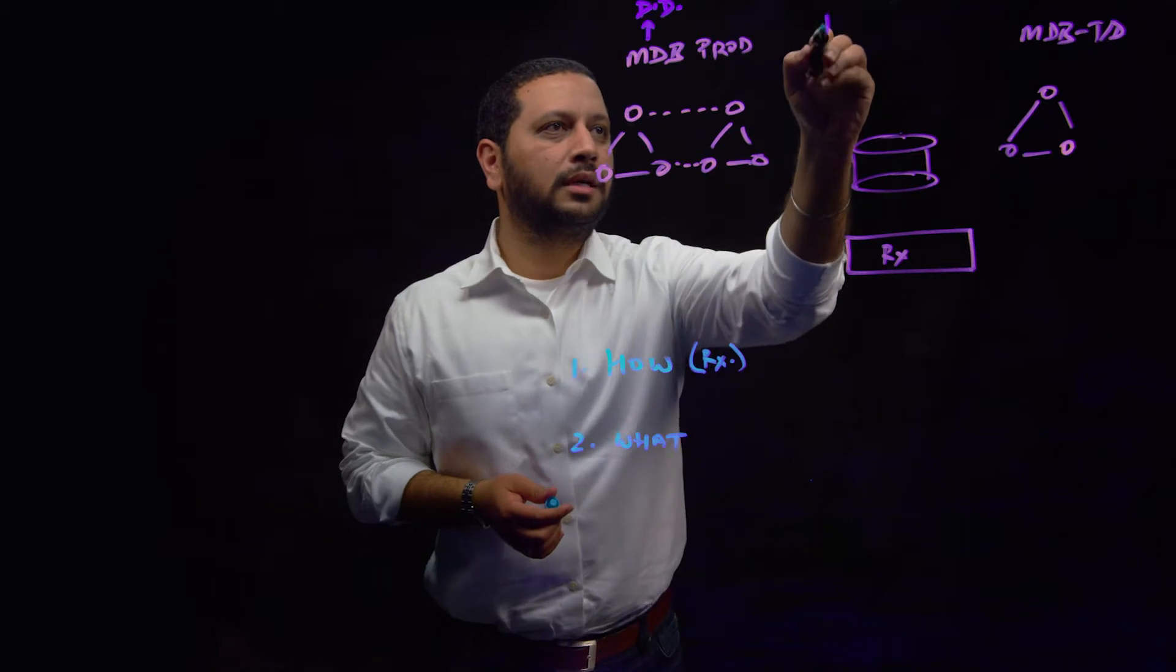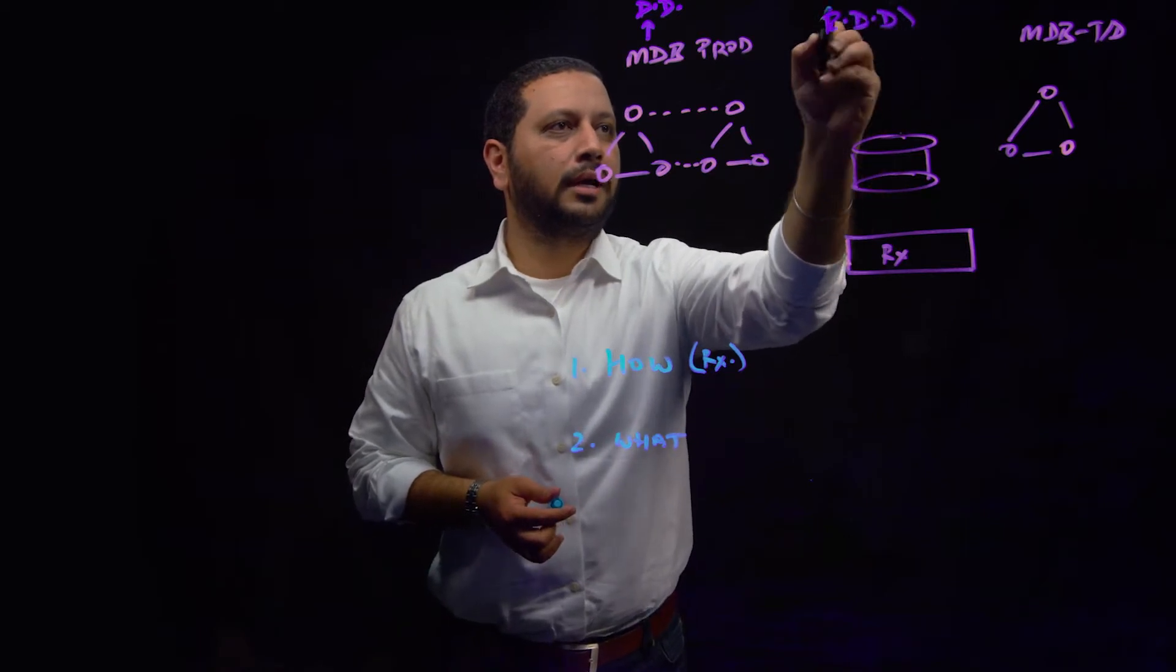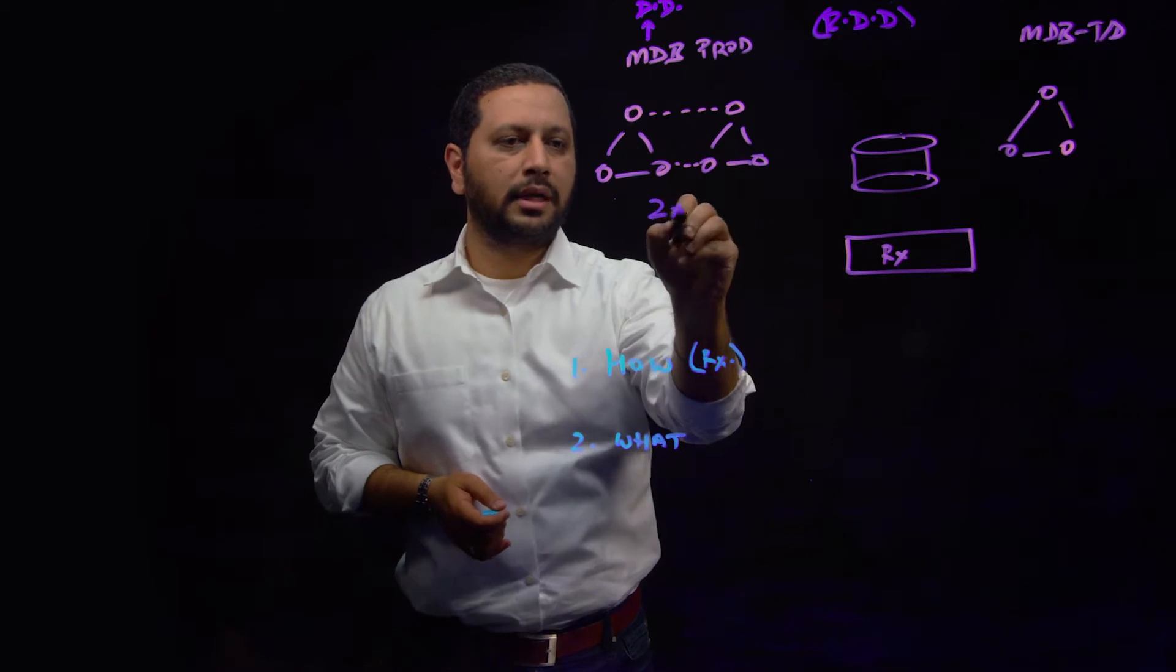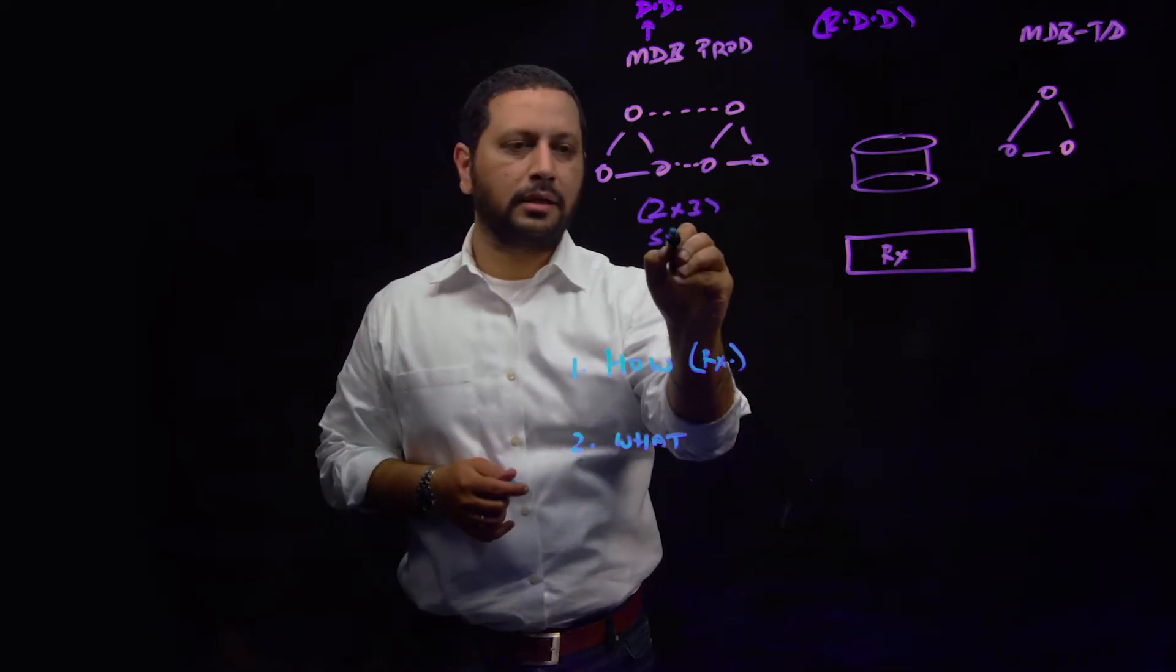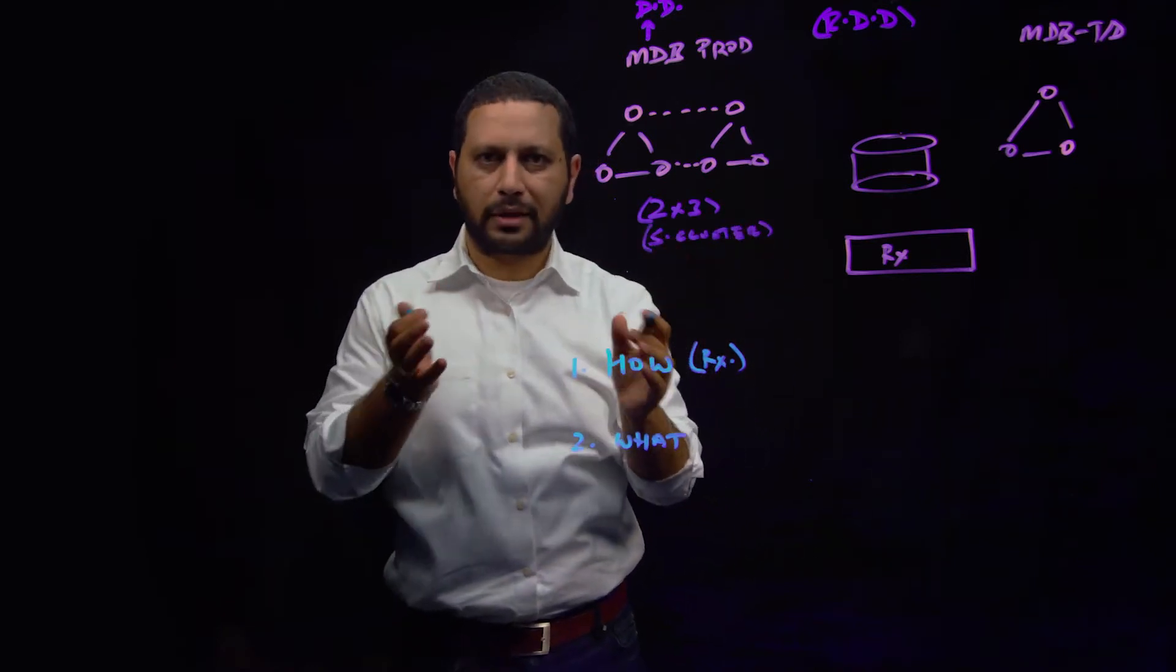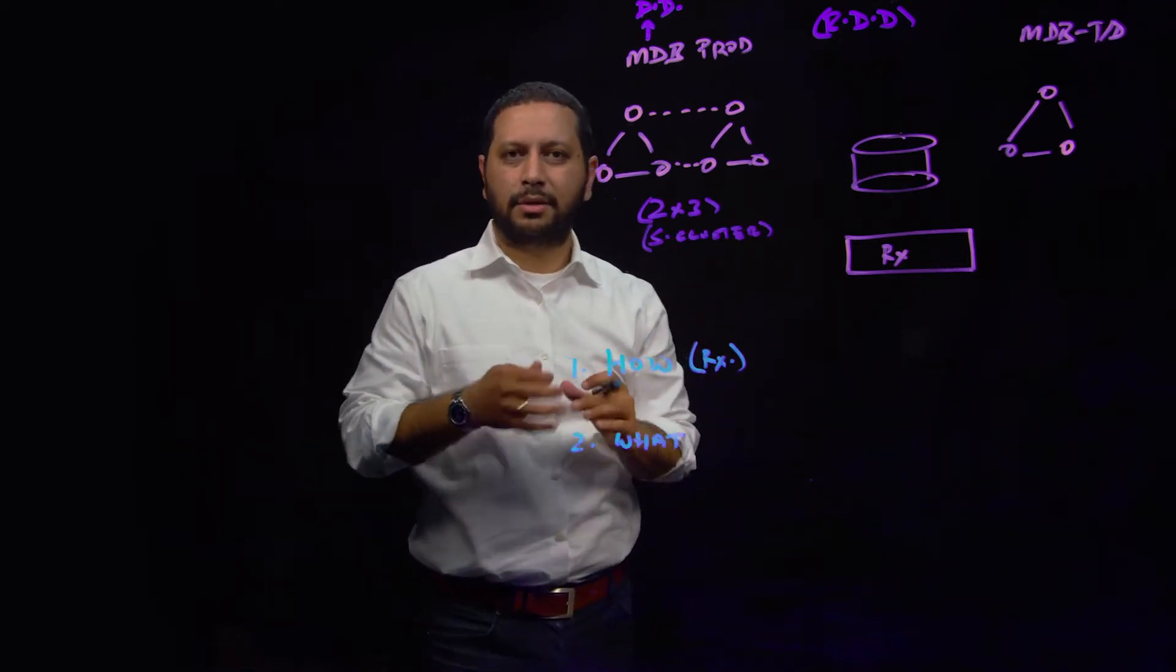What we have here is another reference deployment diagram. For our customers, we have what you see here, MongoDB, which is a 2x3 sharded cluster. We could either go a very simple one replica set, which is 1x3, but sharded cluster is really where the magic is.